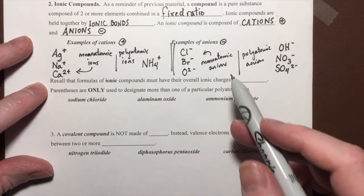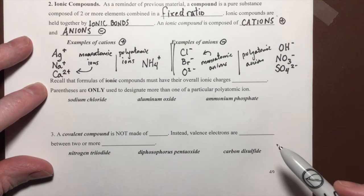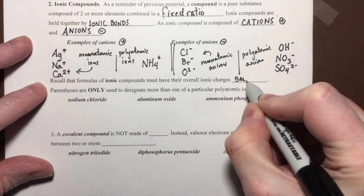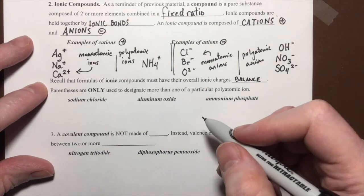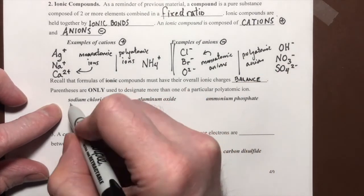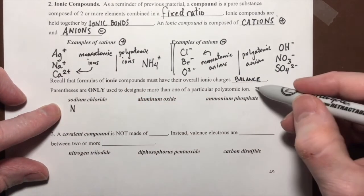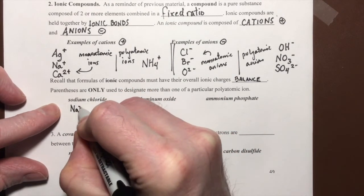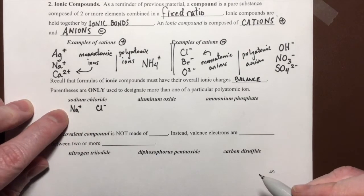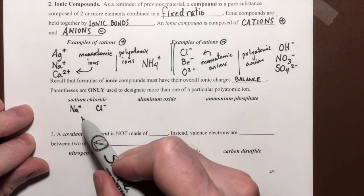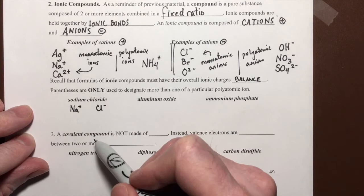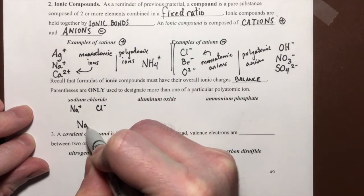Now, in order to bring these cations and these anions together to create an ionic compound, we have to recall that the formulas of the ionic compounds must have their overall charges balance. That means however many positive we have, we have to have the same number of negative charges. So here's a sodium cation and there's a chloride anion. And we're going to bring them together to make an ionic compound. Well, as we can see, a sodium has a positive 1 charge. A chloride has a minus 1 charge. So all we need is one of each and they will perfectly balance each other out.